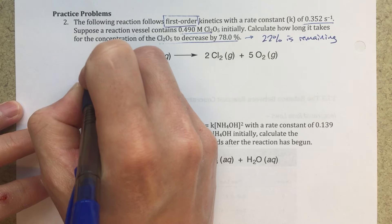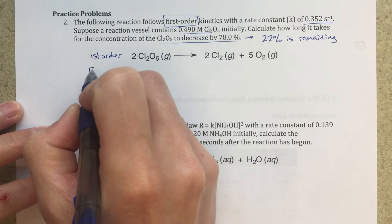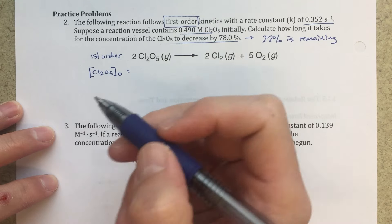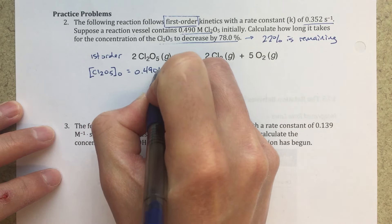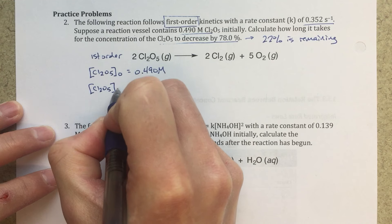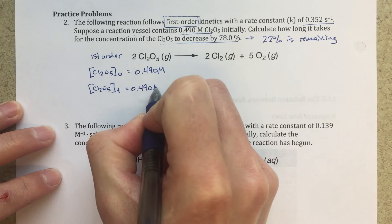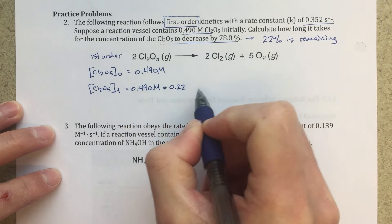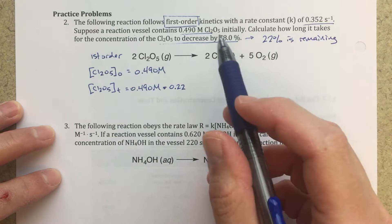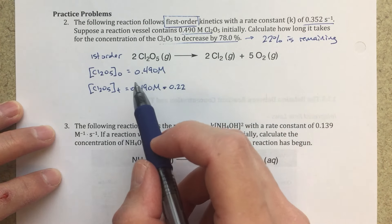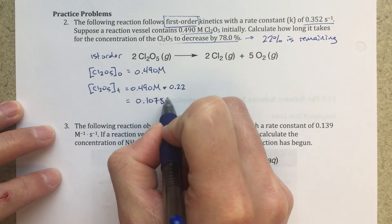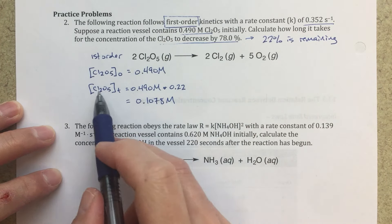So the first thing I'm going to write, well, maybe we'll write first order first, just to keep that in mind. And then my initial concentration of Cl2O5, so this little knot, that means initial, is 0.490 molar. And then our concentration that we're looking for at time T, that's going to be this 0.490 molar times 0.22. And again, I'm getting this 0.22 because that's going to be what it is when 78% has gone away. 22% will be remaining. So 22% of this value, that's going to be my concentration at time T, which is 0.1078 molar. So this is what I'm looking for. That's my concentration at time T.